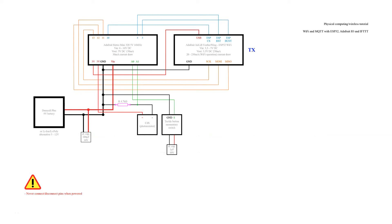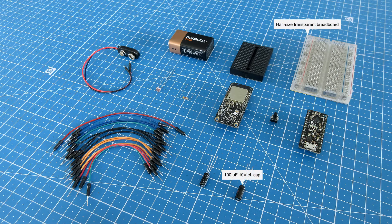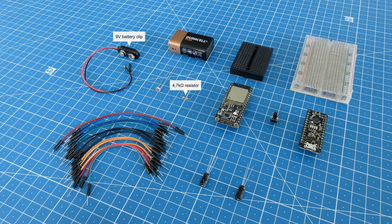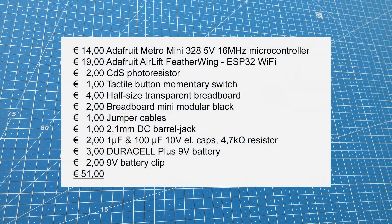Very few parts are required to put a basic IoT device together. Here we are augmenting an Adafruit Metro Mini with an Adafruit Airlift Featherwing ESP32, which provides Wi-Fi and Internet connectivity. Even with a very basic device like this, you can filter, process and transmit data from several different sensors at once. For real use in the field, replace the 9V block with a lithium-ion battery or enhance your device with a solar panel powered battery charging circuit. For your own projects, you can find all-in-one devices and alternative parts on the market.